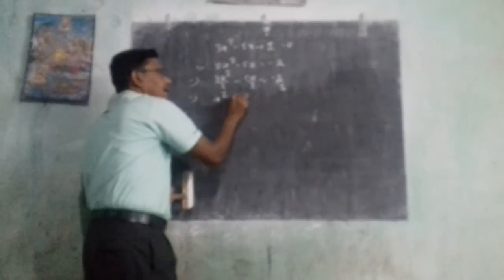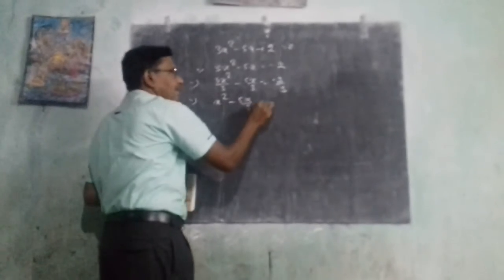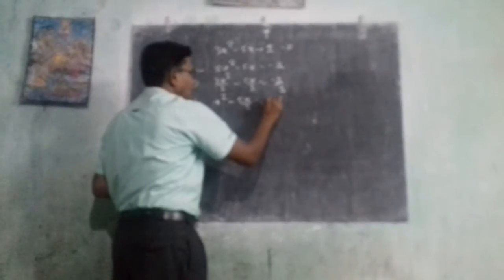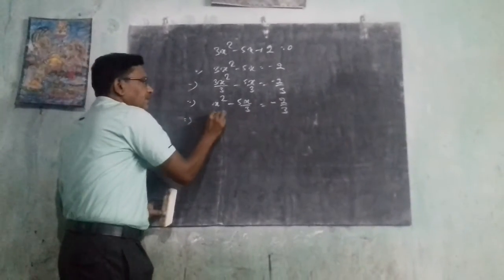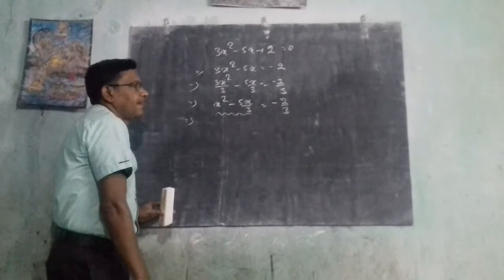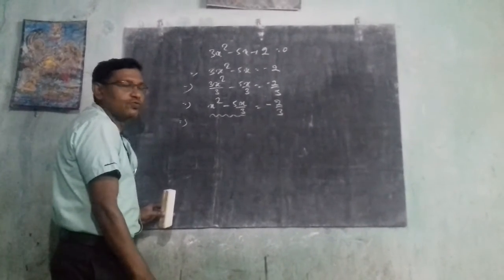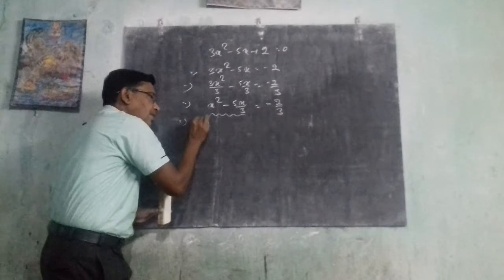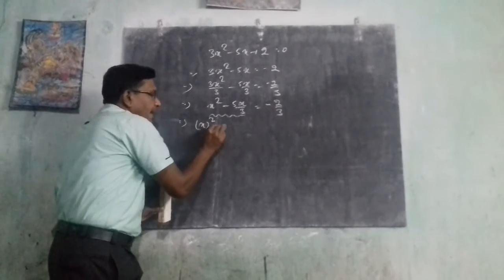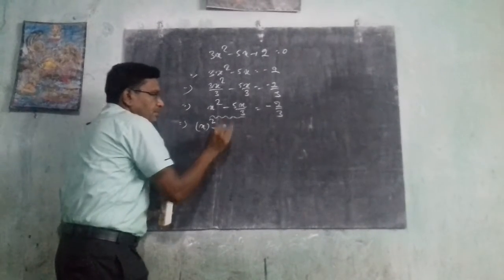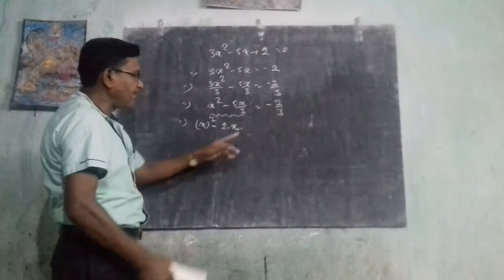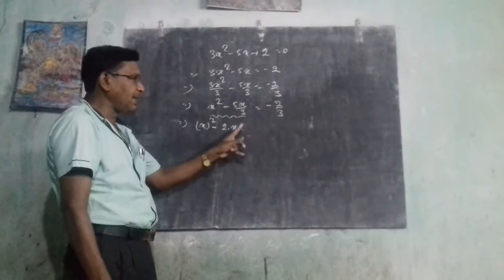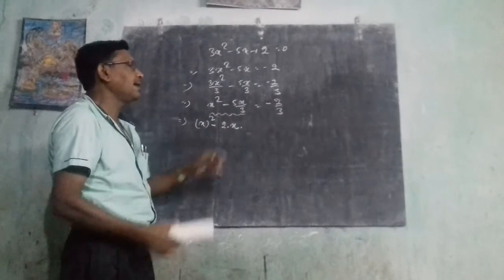I put this term into the (a minus b) whole square form. Here, a squared minus 2ab: a is x, and b must be chosen so that 2ab equals 5x over 3. One should be multiplied here in place of b, such that it becomes 5x over 3.